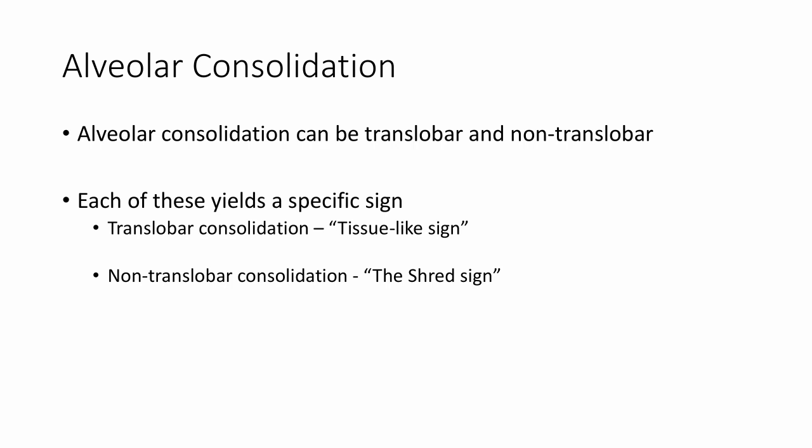Alveolar consolidation by way of ultrasound can be further divided into what's called translobar or non-translobar consolidation. And each of these entities yields a specific sign. In the case of translobar consolidation, we have what's called the tissue-like sign. And in the case of non-translobar consolidation, we have the shred sign. I will give you some images as we go along to help you further orient yourself, as you may have already seen these signs but not recognized what they were specifically.